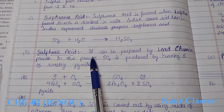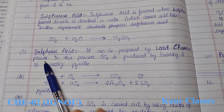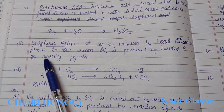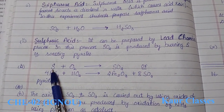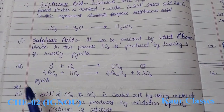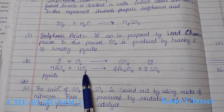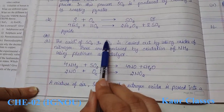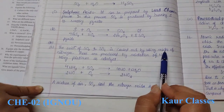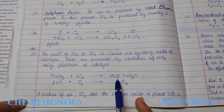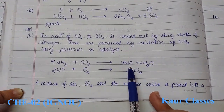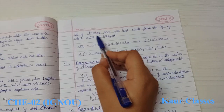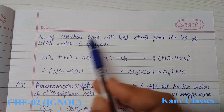In the lead chamber process, the first step produces sulfur dioxide — either by burning sulfur with oxygen, or by roasting pyrites in air to form iron oxide and liberated SO2. The second step converts SO2 to SO3 using nitrogen oxides as catalyst. Ammonia reacts with oxygen to form nitrogen oxide, which oxidizes SO2 to SO3.